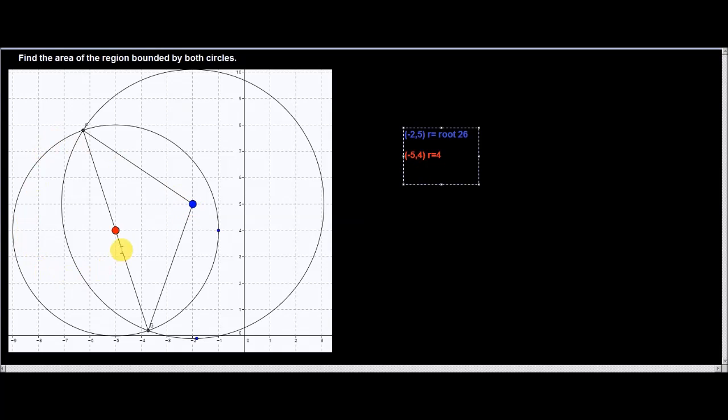Next, you can make the equations of both circles. The equation of the first circle is (x+2)² + y² = 26, which is the radius squared. The second one is (x+5)² + (y-4)² = 16.